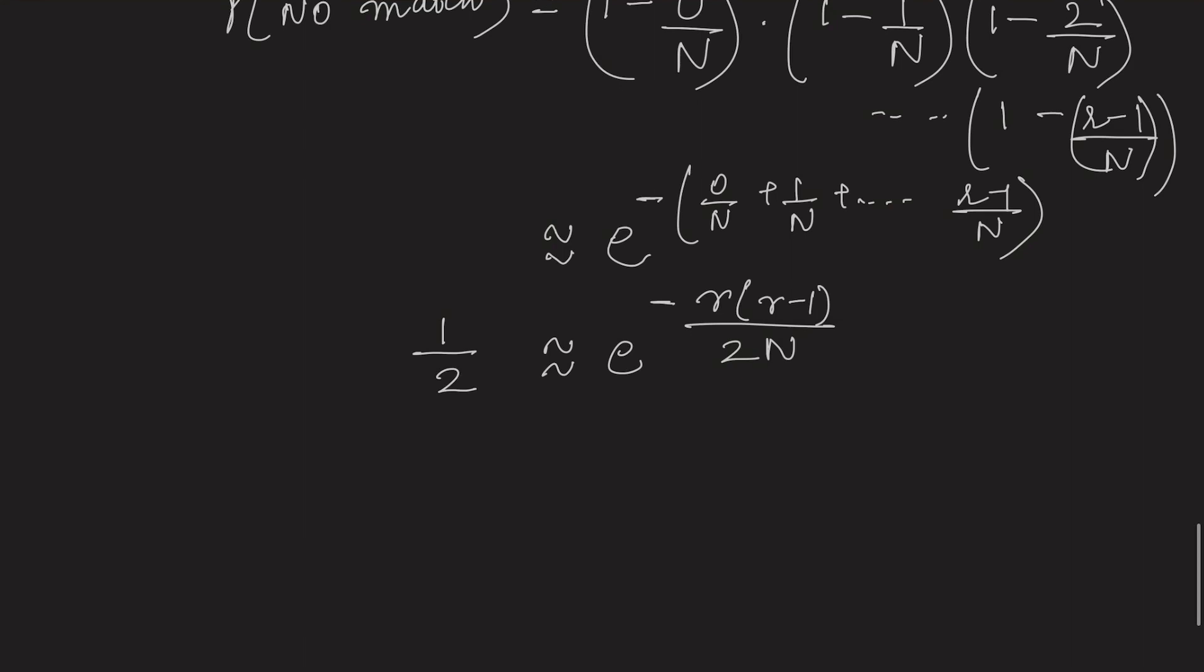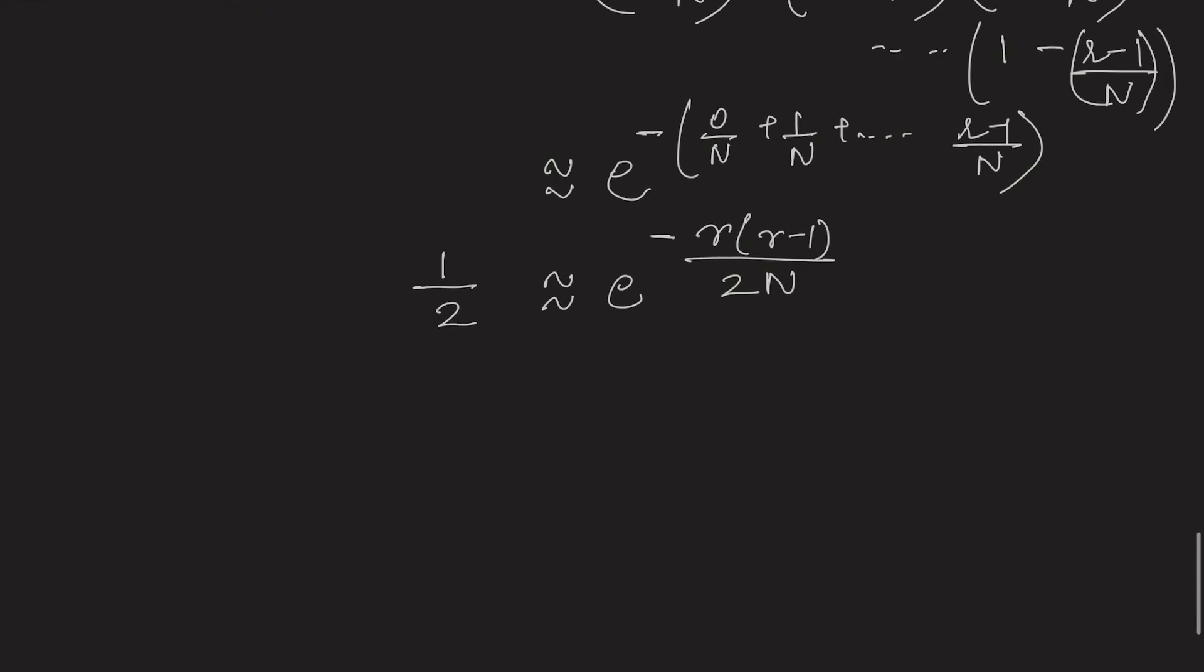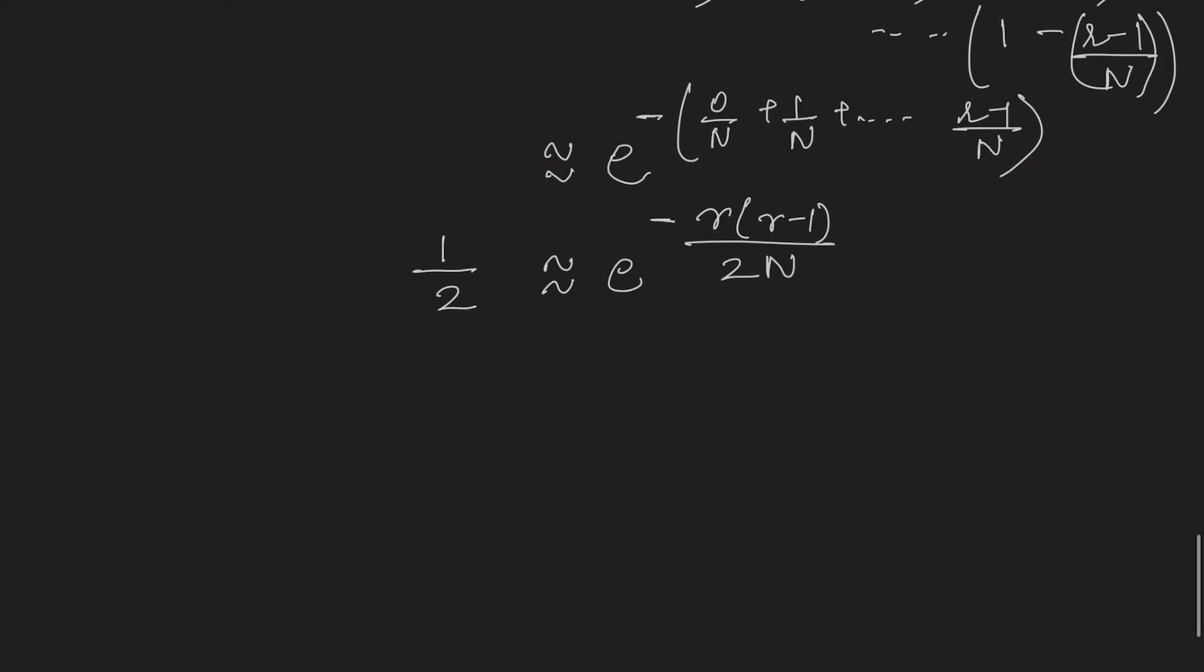And this is equal to 1 by 2. So, this equation is easier to solve. And by putting n equals to 365, we will get the value of r equals to 23.